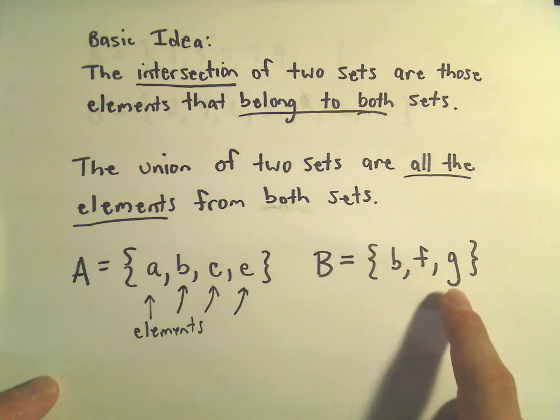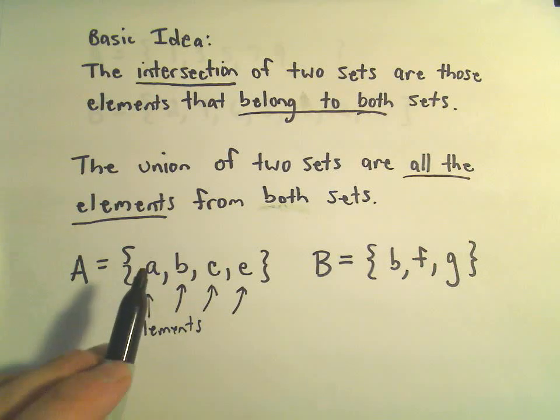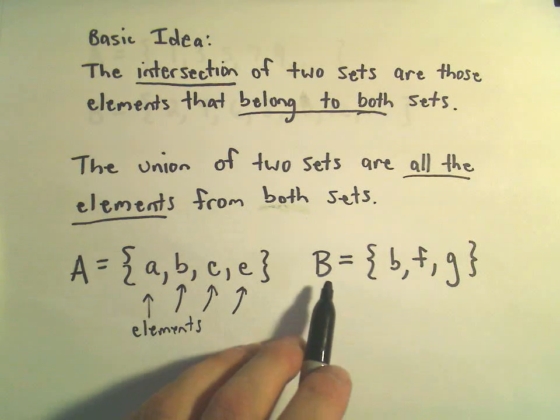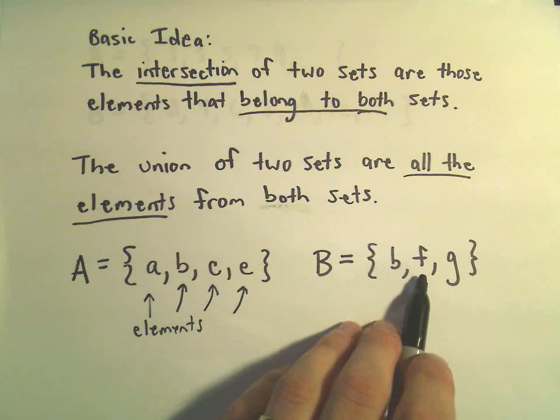And in our set B, we have the elements B, F, and G. Maybe A stands for the set of people who are in algebra class, and maybe there's Alan, Bob, Carl, and Eugene, and B stands for the people that are in biology. Maybe we've got Bob, Fran, and Gary.